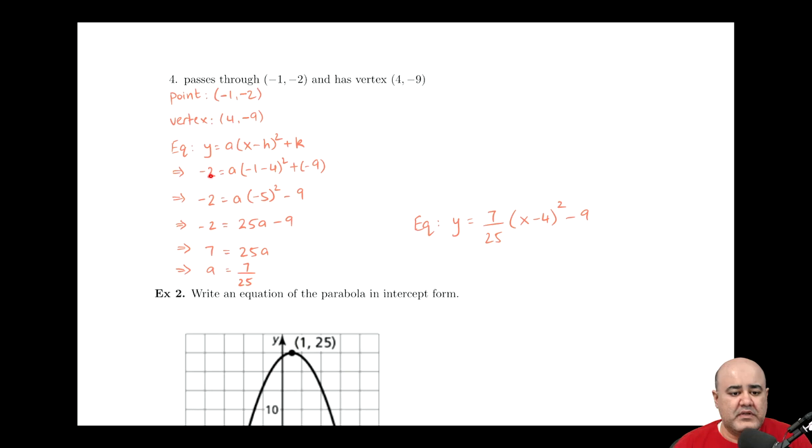And now we just throw in the numbers where they belong. The y-coordinate of a point that the function passes through is negative 2, so that goes there. a is the unknown, it comes along for the ride. The x-coordinate of a point that the function passes through is negative 1, so that replaces that. h is 4, so that goes there. k is negative 9, that goes there.